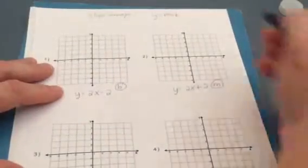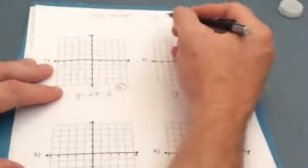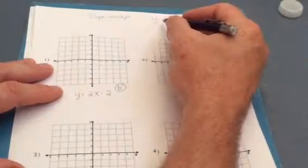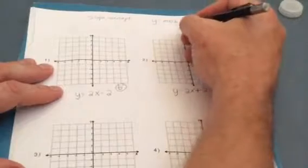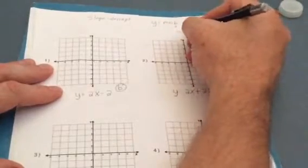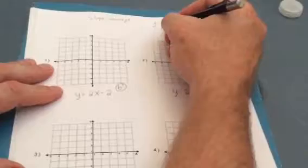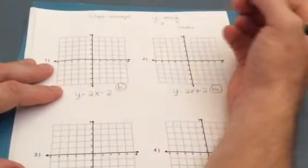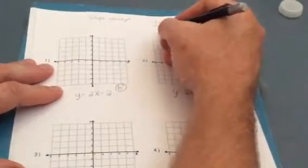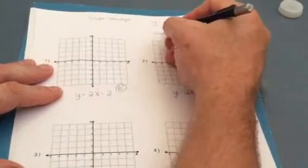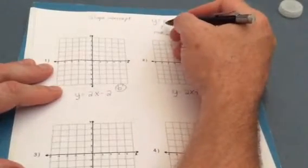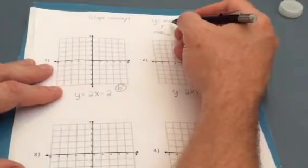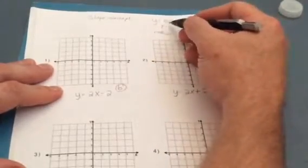So if we can talk about this really quick with just slope-intercept form. You guys know slope-intercept form is y equals mx plus b. This b right here is actually called the constant term. And this m right here, which as you know is the slope, is called a coefficient. It's called a coefficient because it's a number in front of a variable.